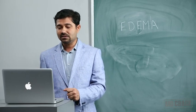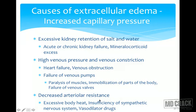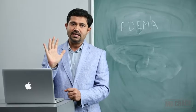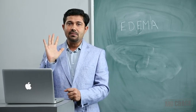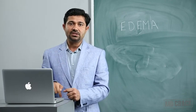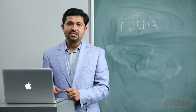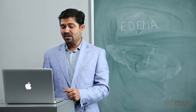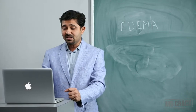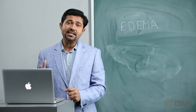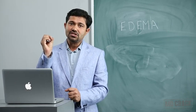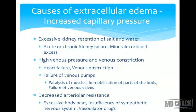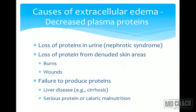Decreased arterial resistance also causes edema. When arterioles dilate, blood flow increases, raising hydrostatic pressure at the arterial end of capillaries, causing more filtration and edema. Causes include excessive body heat, insufficiency of the sympathetic nervous system (which maintains vasomotor tone), and vasodilator drugs — all of which dilate arterioles and lead to edema.